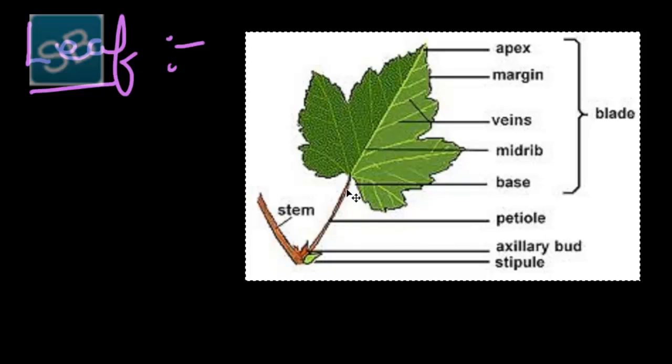If petiole occurs in a leaf, then that leaf is known as petiolate. And if petiole is absent, the leaf is called sessile. Generally, petioles are round and cylindrical.